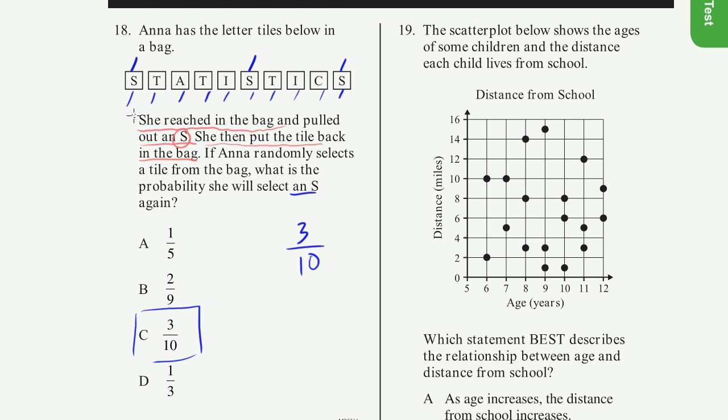And the reason why I said it's a trick question is because they write this first statement, which really doesn't change the problem at all. She took an S out, she put it back. If she said that she took out an S, and then she did not put it back in the bag, then you would say, oh gee, then there's only 9 tiles left, and only 2 of them are S's. And then you would have said 2 ninths. But since she did put the S back in the bag, we could say, oh, there's 10 letters in the bag, 3 of them are S's. So the answer is 3 tenths.